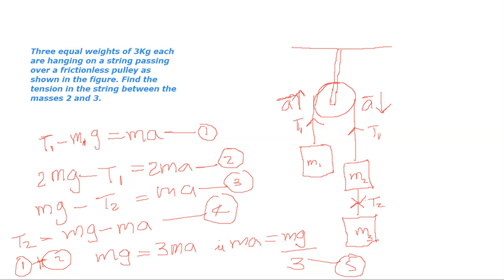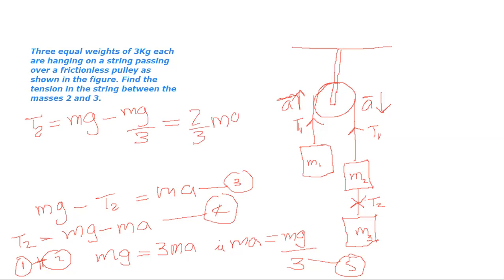Now let us erase our first and second equations. We have MA equals Mg divided by 3. When we substitute this value for MA in equation 4, T2 equals Mg minus Mg divided by 3, which equals 2Mg divided by 3.